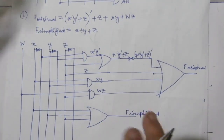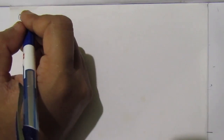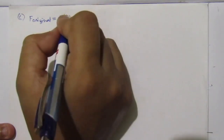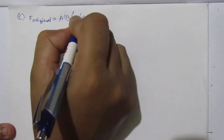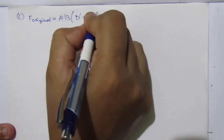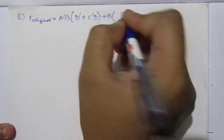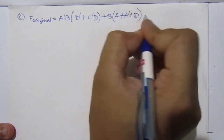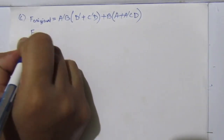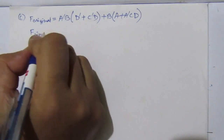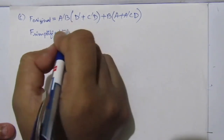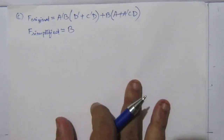Now let us draw the logic diagram for part c. For part c, f original equals (ā·b)·(d̄ + c̄·d) plus b·(a + ā·c·d). And f simplified equals b. Now let us draw the diagram.